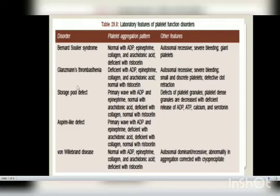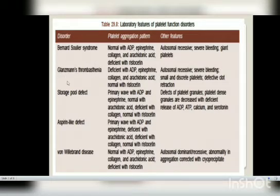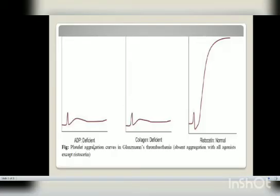In platelet disorders such as Bernard-Soulier syndrome, Glanzmann's thrombasthenia, storage pool defect, aspirin-like defect, and von Willebrand disease, the platelet aggregation pattern will show whether it is normal or deficient. For example, in Glanzmann's thrombasthenia, the aggregation pattern will be deficient with ADP, epinephrine, collagen, and arachidonic acid, whereas it is normal with ristocetin. The aggregation curves for Glanzmann's thrombasthenia show deficient ADP, deficient collagen, and normal ristocetin.